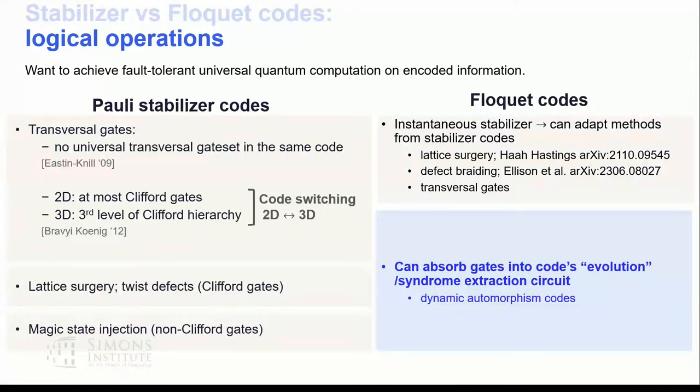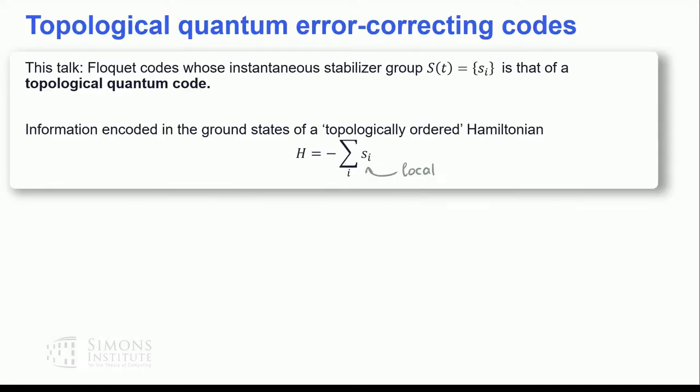I'll explain why we call it that later. We call it dynamic rather than Floquet because it doesn't have to be periodic. In order to explain how this works, I need to explain automorphisms first — specifically, automorphisms of the topological order.